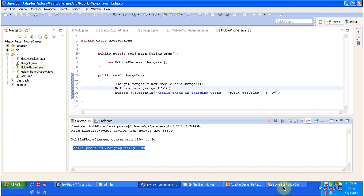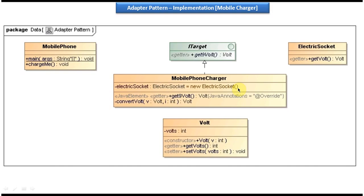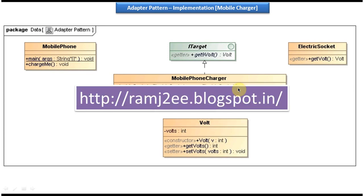I will open the class diagram again. I think you understood the Adapter Design Pattern implementation using this mobile phone charger example. I have put together all this sample code in my blog called ramj2e — you can just visit the site and get the sample code. This is about Adapter Design Pattern implementation. Thanks for watching. Bye.